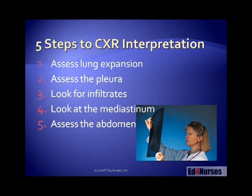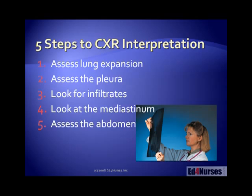Now let's take a look at our five steps to chest x-ray interpretation. First, assess the lung for full expansion — trace the lung tissue all the way out to both sides. Next, assess the pleura, making sure it comes all the way down to the diaphragm with nice costophrenic arches and angles. Then assess the pleura for infiltrates — it should look dark in nature. Next look at the mediastinum to make sure nothing is going on with the heart. And lastly, assess the abdomen.